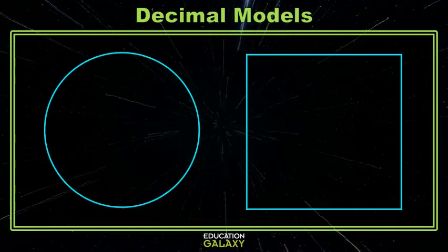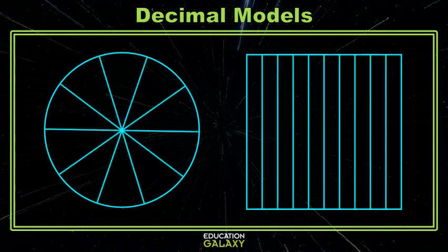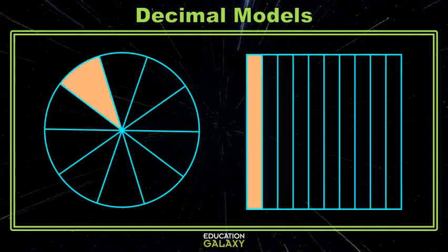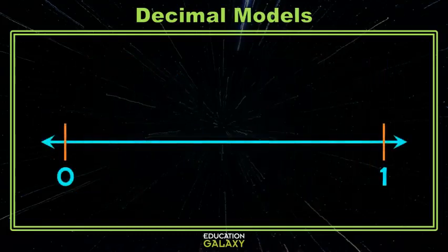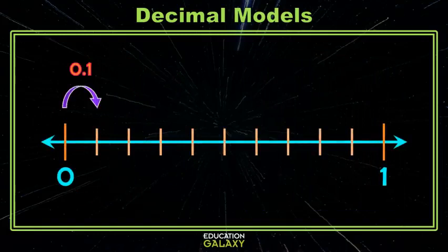Let's look at a few models. Here I have a circle and a square. If I chop each of these whole items into 10 pieces, then one of their pieces is referred to as a tenth. Similarly, on a number line, when I have one whole space, and I divide that into 10 spaces, one of those spaces is a tenth.